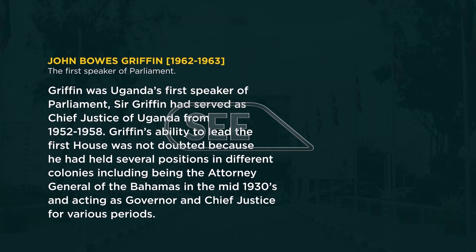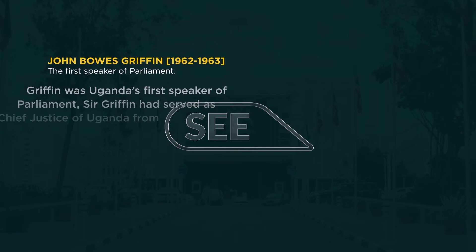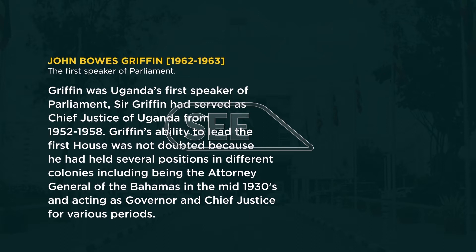After Uganda attaining independence on the 9th of October 1962, the first session of the first parliament of Uganda was held the following day on Wednesday 10th October 1962. Under the independence constitution of 1962, the first parliament of Uganda was partly elected and partly nominated. It was led by John Bowes Griffin, Uganda's first Speaker of Parliament. Sir Griffin had served as Chief Justice of Uganda from 1952 to 1958.